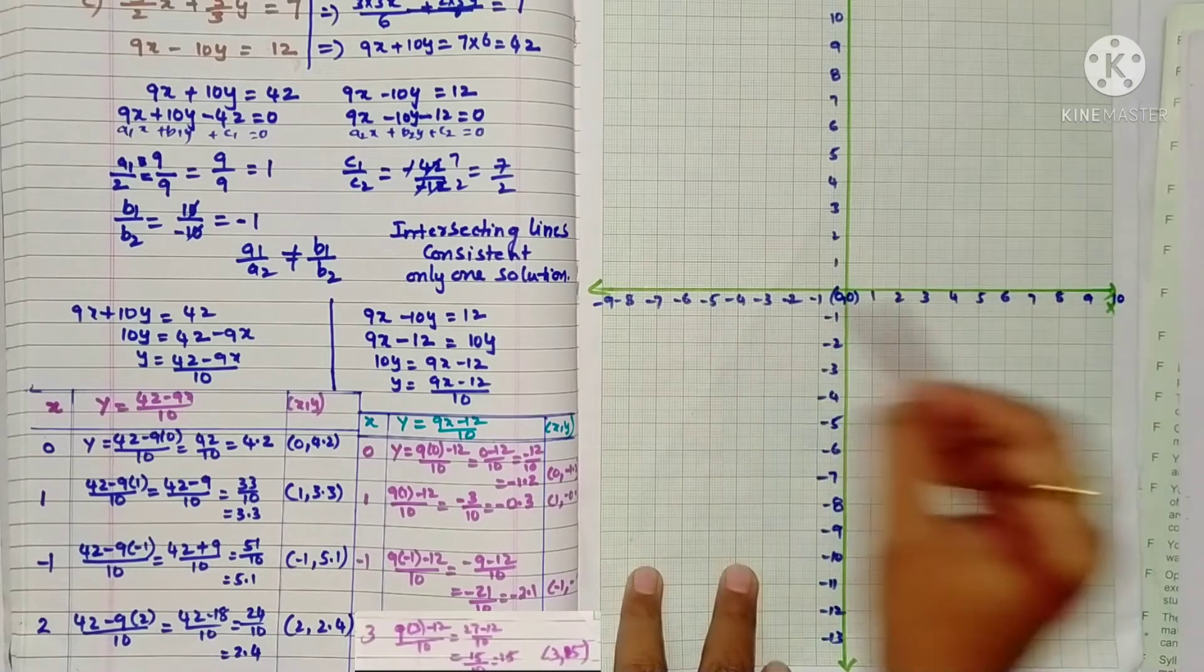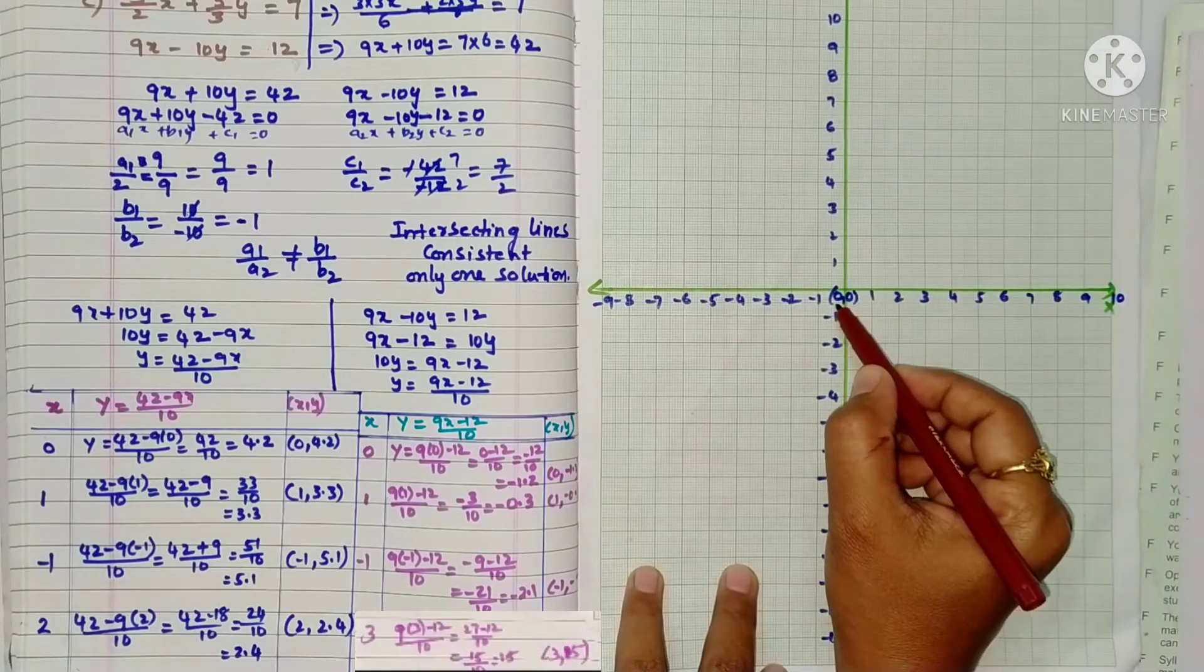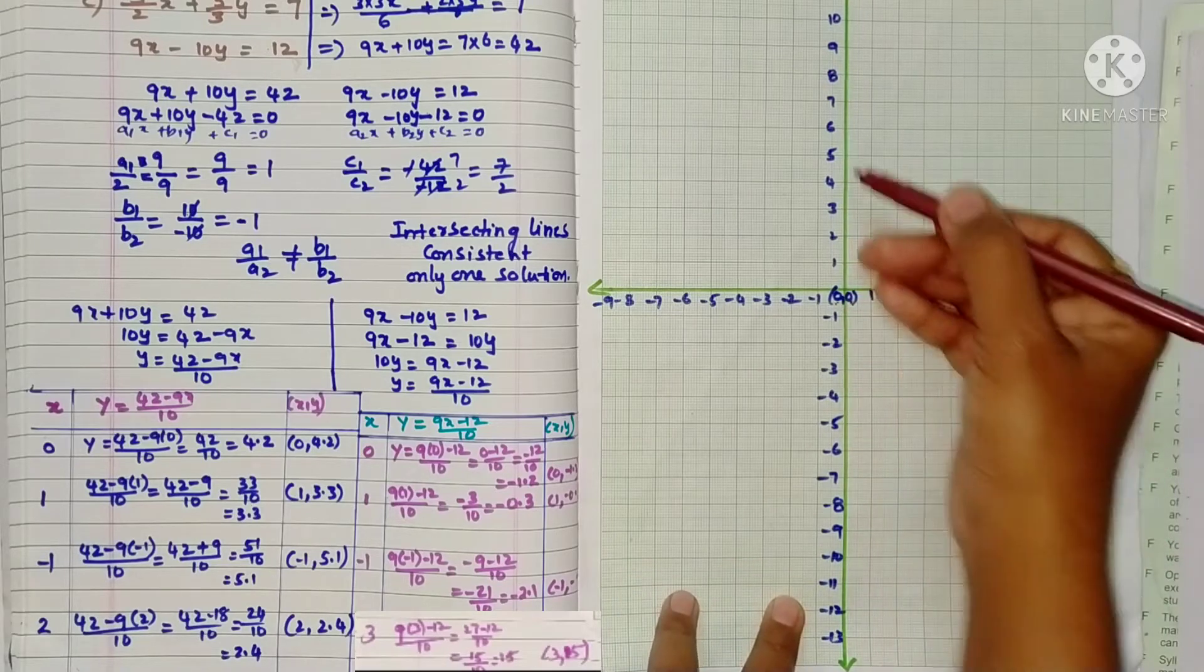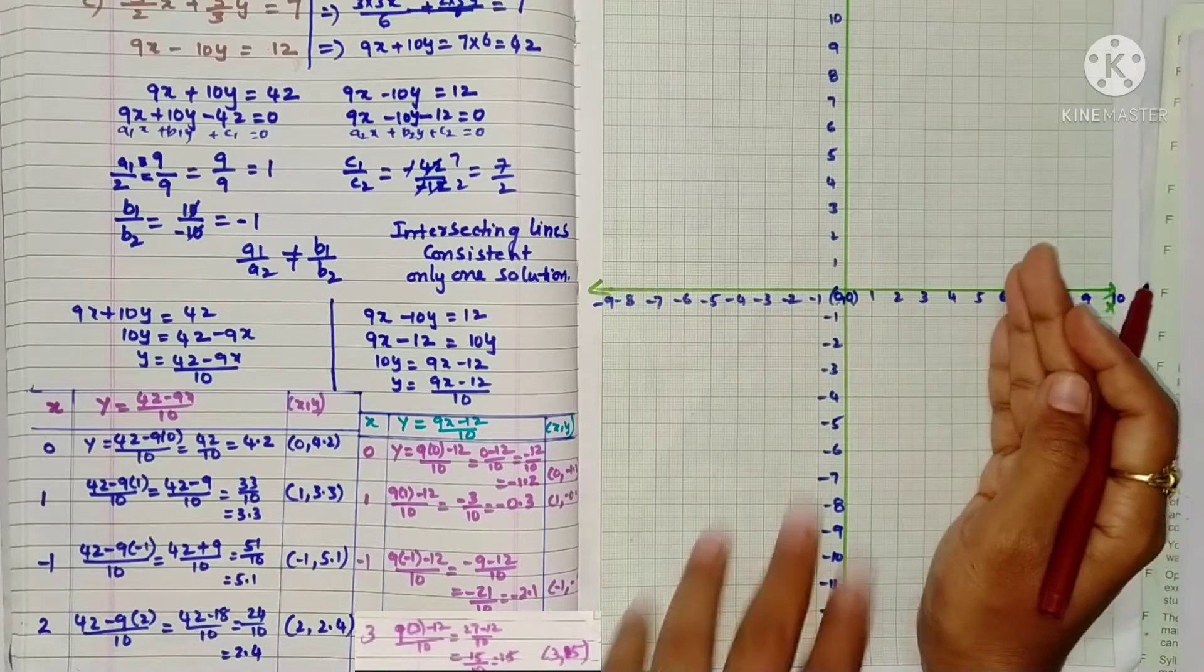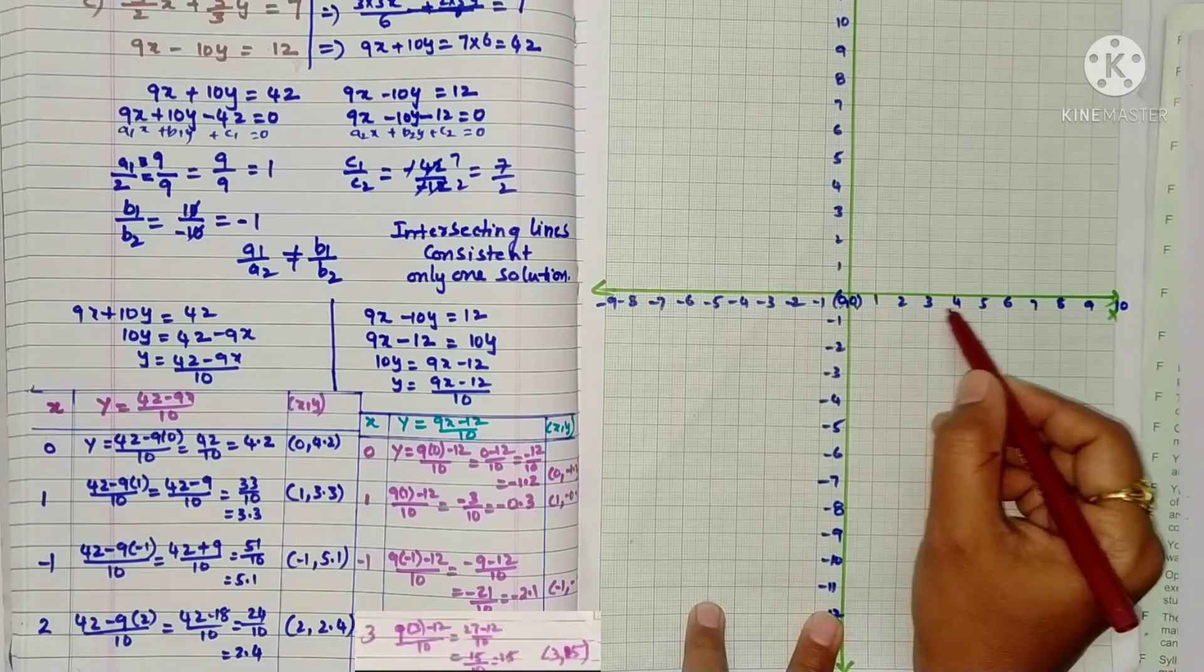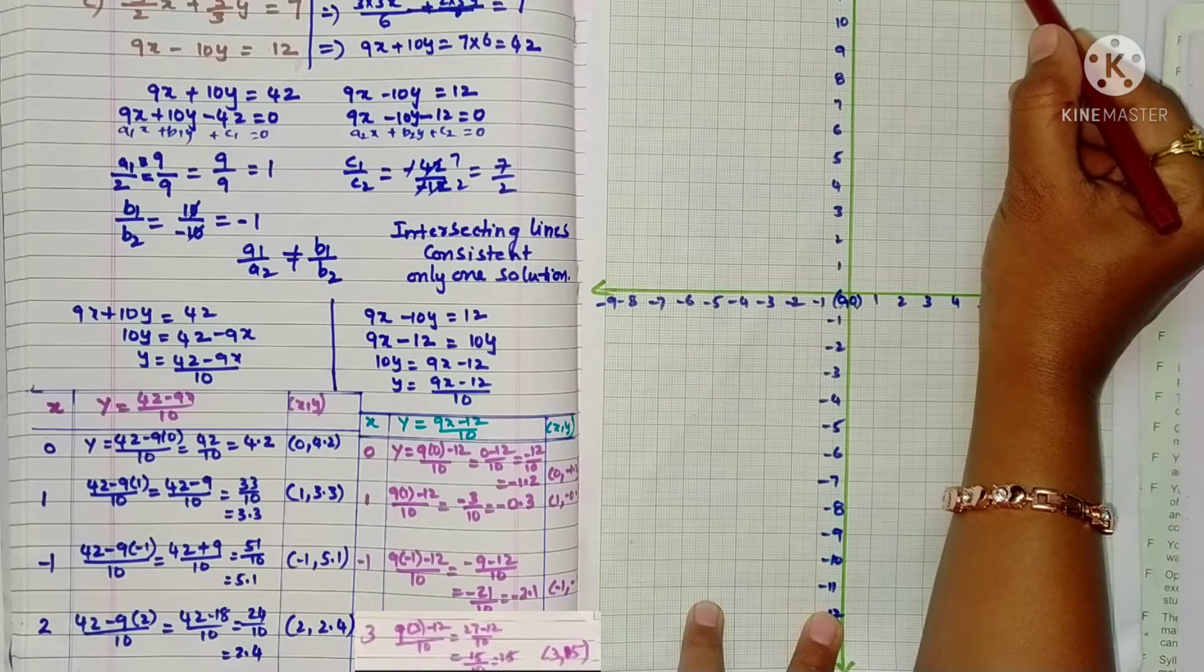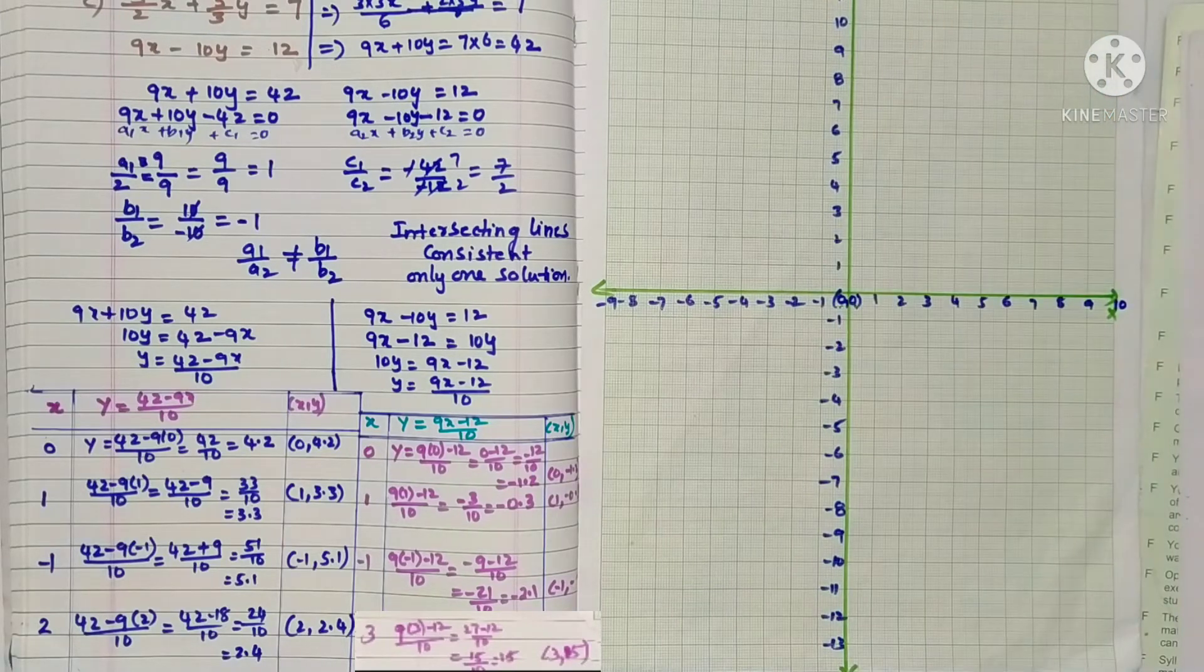So, horizontal line is x-axis, vertical line is y-axis. The intersection is origin 0 comma 0. Above the origin is positive, below is negative. Right side positive, left side negative numbers. And each time you have to write the scale. On the x-axis, 1 cm equals 1 unit.